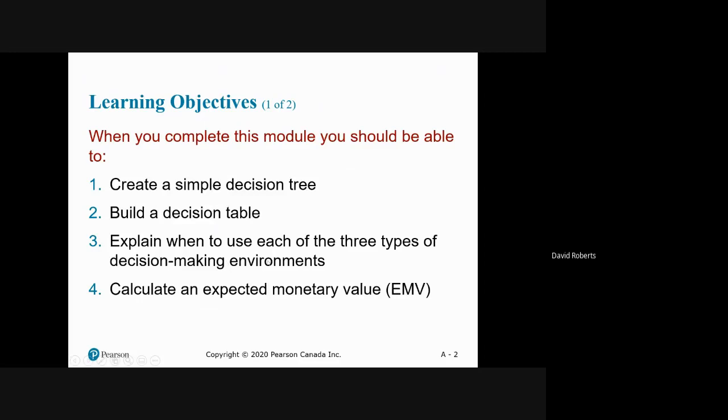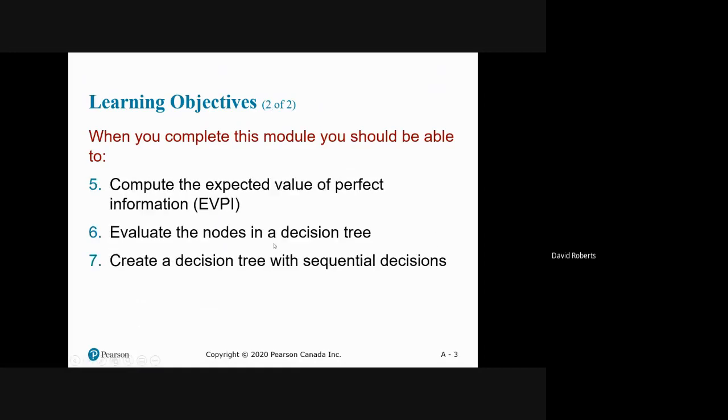We're going to explain where we use decision trees and decision tables, and we're going to calculate expected monetary value, expected value of perfect information. We're going to talk about the nodes in the decision trees and make decisions.